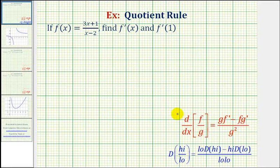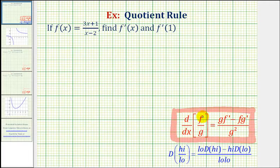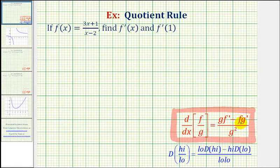The quotient rule is stated here: if we want to find the derivative of a quotient function where the numerator is function f and the denominator is function g, the derivative is equal to g times f prime, minus f times g prime, divided by g squared. So we have the denominator times the derivative of the numerator, minus the numerator times the derivative of the denominator, all divided by the denominator squared.